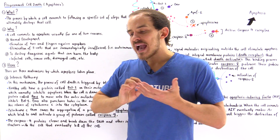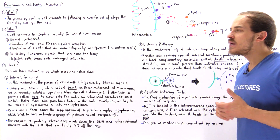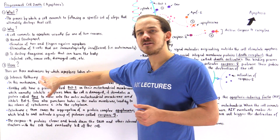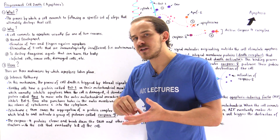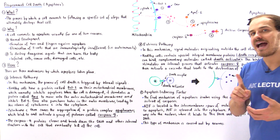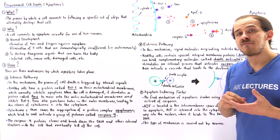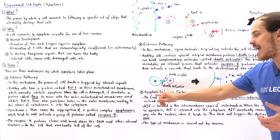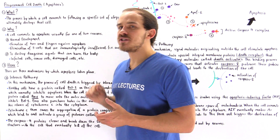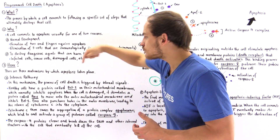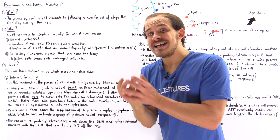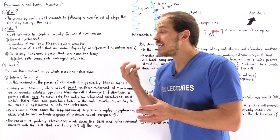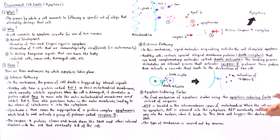What about how? How does apoptosis actually take place? There are three very common mechanisms by which apoptosis takes place. Mechanism number one is called the intrinsic pathway. Mechanism number two is called the extrinsic pathway. And mechanism number three involves a molecule known as apoptosis inducing factor or AIF. Let's begin with the intrinsic pathway. In this mechanism, the process of cell death initiates inside the cell itself — in fact, it initiates inside the mitochondria.